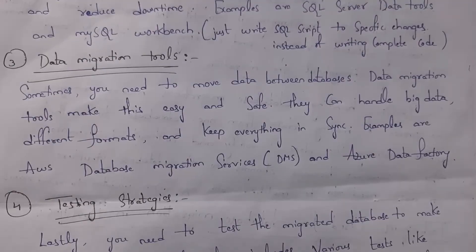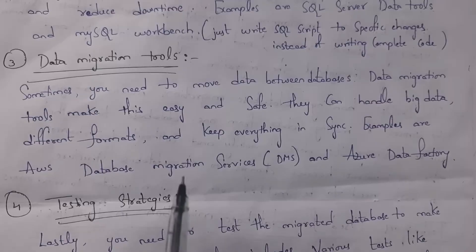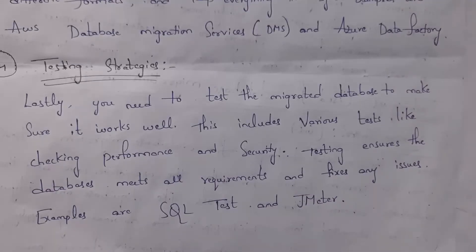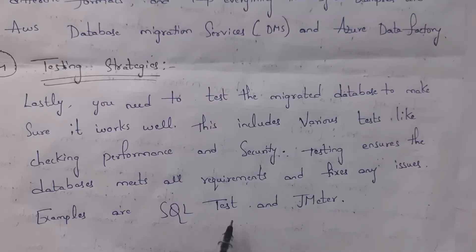The third technique is data migration tools. Schema migration tools are used to modify only the schema — the structure of the database — but if you want to transfer data from one database to another, you use data migration tools. Sometimes there will be a huge amount of data, and manually transferring it is very tough, so data migration tools automate this process. AWS Data Migration Services and Azure Data Factory are examples of data migration tools. Even after performing database migration, you need to test your migrated database — for example, performance tests and security tests. Tools like SQL Test and JMeter can be used for testing the migrated database.